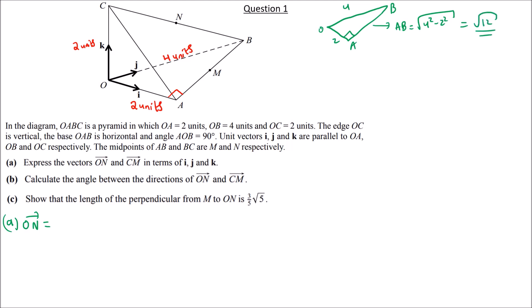That is length EB — it equals square root of 12 units. Next, we also find length BC. Since OC is a vertical line and OB is a horizontal surface, they are perpendicular.